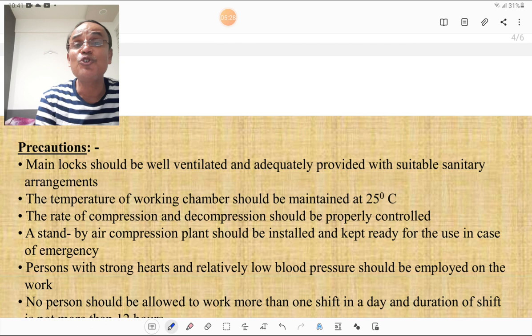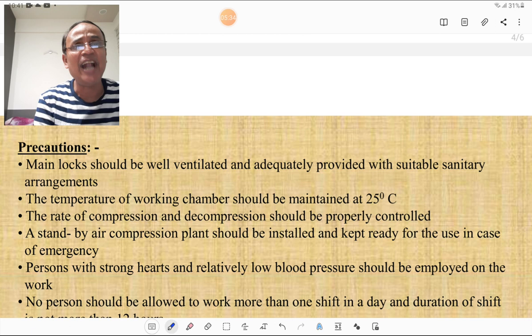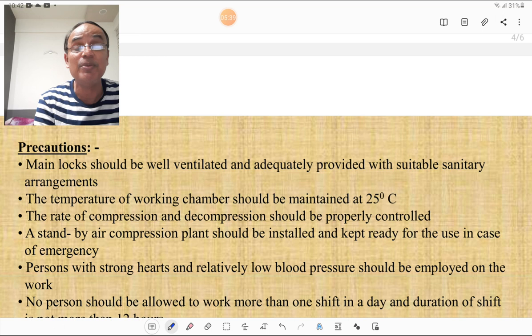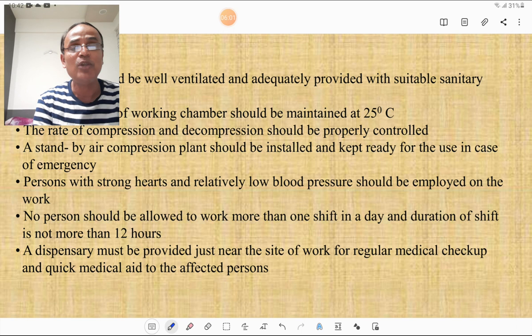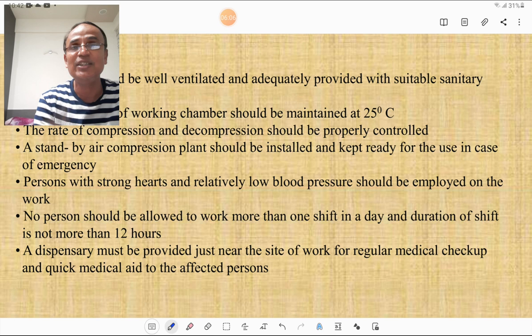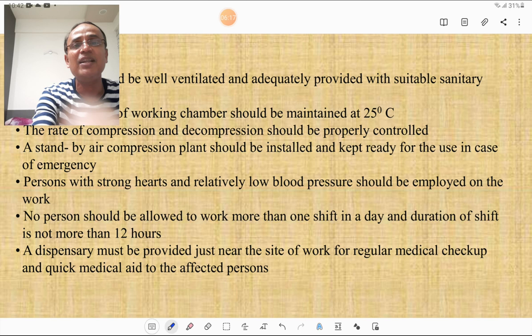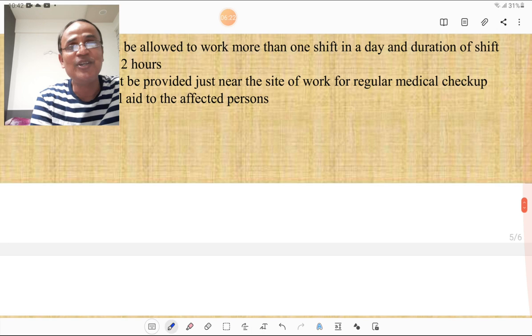What are the different types of remedial measures or precautions to be taken to avoid this caisson disease? Main lock should be well ventilated and adequately provided with suitable sanitary arrangements. The temperature of the working chamber should be maintained at 25 degrees Celsius. The rate of compression and decompression should be properly controlled. A standby air compression plant should be installed and kept ready for use in case of emergencies. The person with strong hearts and relatively low blood pressure should be employed on the work. No person should be allowed to work more than one shift in a day and duration of the shift should not be more than 12 hours. And a dispensary must be provided just near the site of work for regular medical checkup and quick medical aid to the affected persons. These are the remedial measures or precautions to be taken toward the caisson disease.